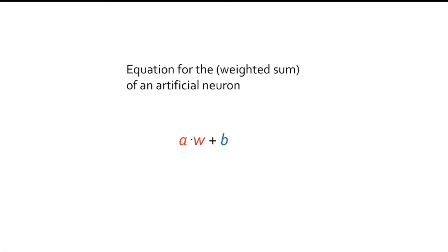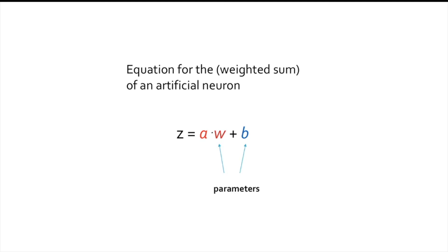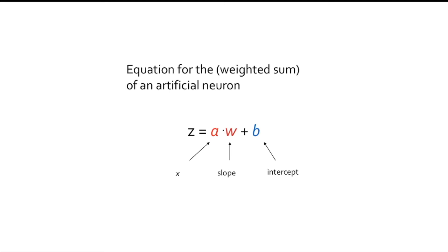The weights and the biases, as well as the thresholds in more traditional perceptrons, are called the parameters of the model, because they are the variables whose values are adjusted so as to allow the network to learn the task. When a neural network learns, what it does is gradually modify its parameters until the desired result is achieved. By way of parenthesis, some of you might recognize here the general form of a linear equation, so that w is the slope and b is the intercept.